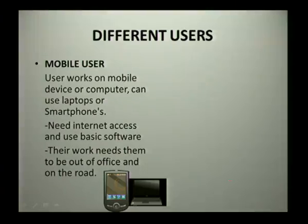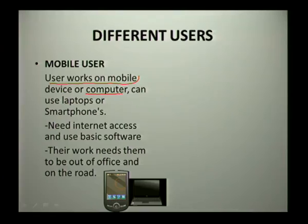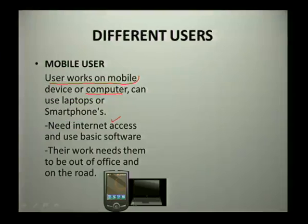The next user is a mobile user. This user basically uses a mobile device because they are mostly needed to be on the road. They can use a mobile computer such as a laptop, or they could use a smartphone. These users need to be on the road, and while on the road they need internet access. This internet access allows them to stay in contact with what is happening in the office, get information online, and communicate online. They also use some basic software on their computers or smartphones, and their work requires them to be out of the office, which is why they need mobile devices.